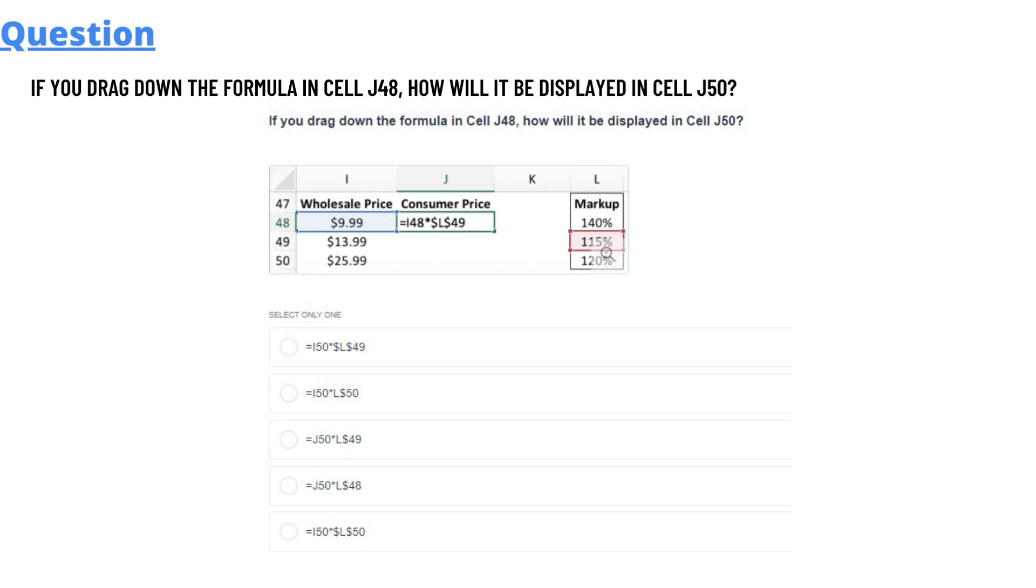how will it be displayed in J50? We have rows with wholesale price, consumer price, and markup in the columns. The question asks: if we drag down the formula from J48, which is the consumer price section, and drag it down to row 50,